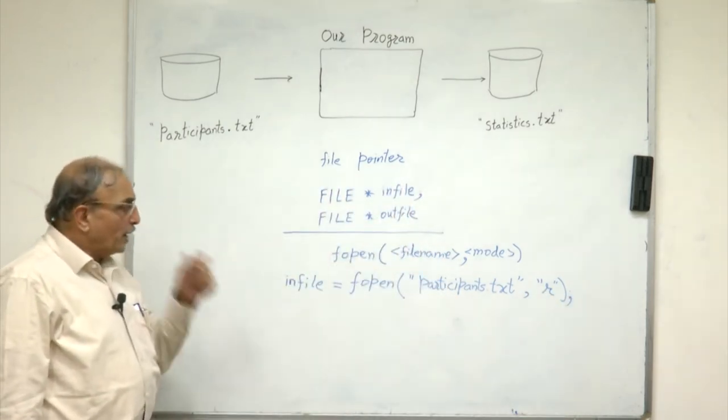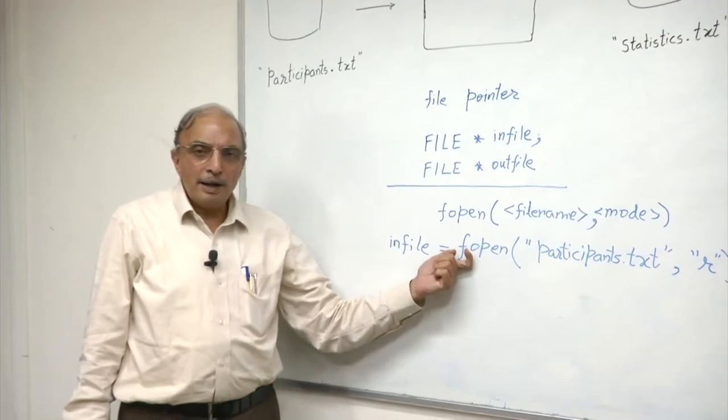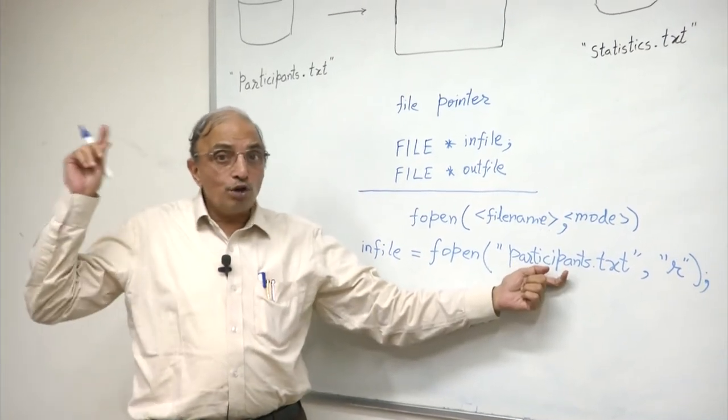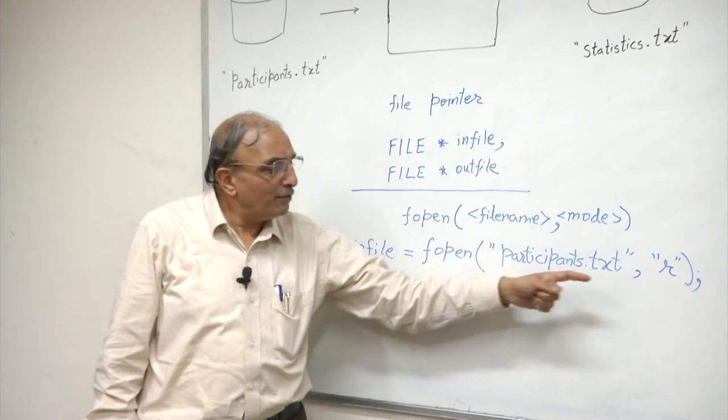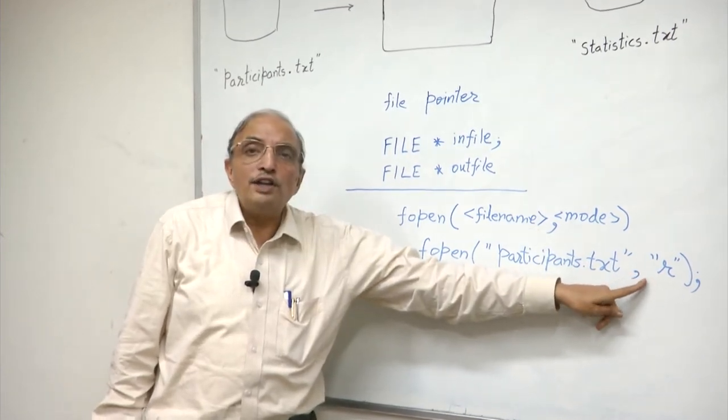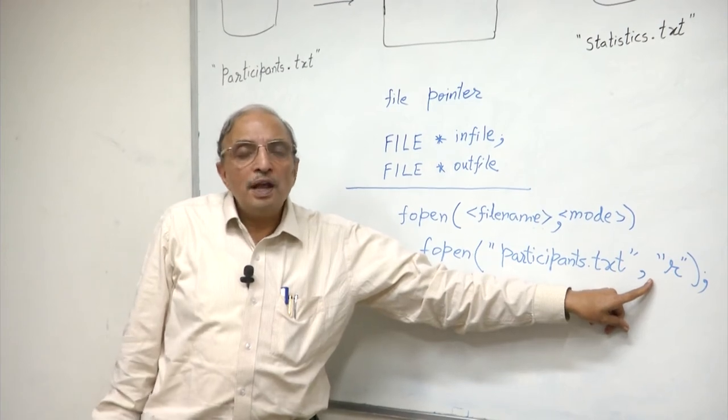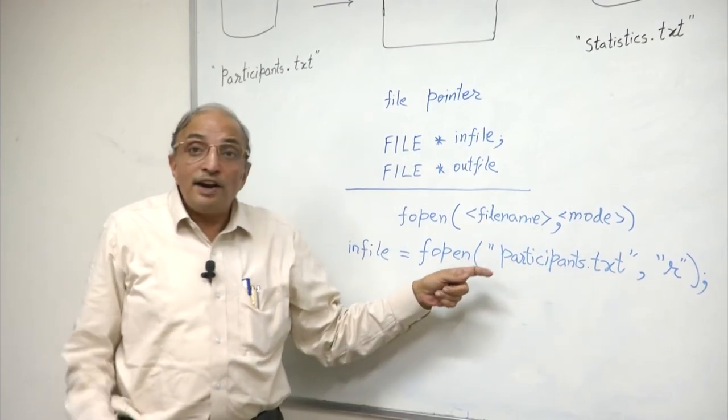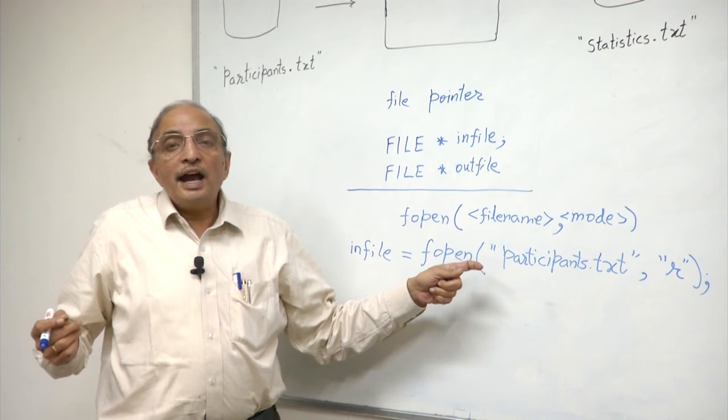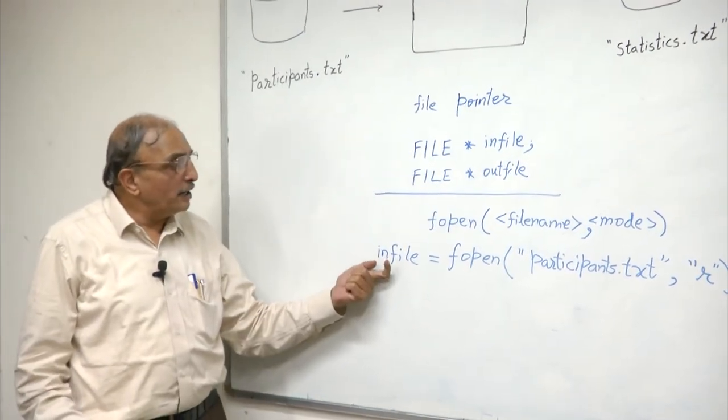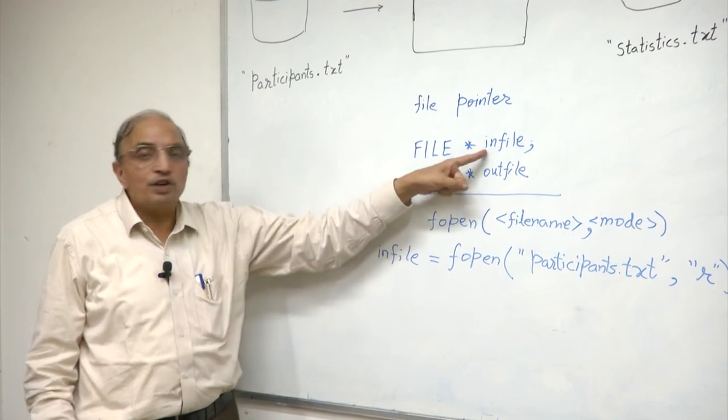Notice what we are doing: we are invoking a function fopen, inside it we are giving the name of an external file as known to the operating system, and then we are giving a mode which is called the read mode. Clearly the file is being opened for input operations. This function will return a pointer, and that pointer we wish to associate with our own internal file pointer called infile, which was declared here.